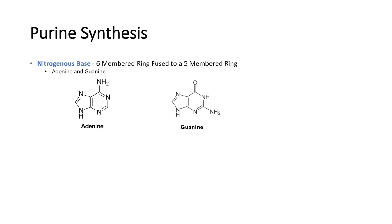A way I remember which is six-membered fused to a five-membered ring is that I always think 'purine' — 'pure' — which reminds me of something that's more complete or more complex: six-membered fused to a five-membered ring.